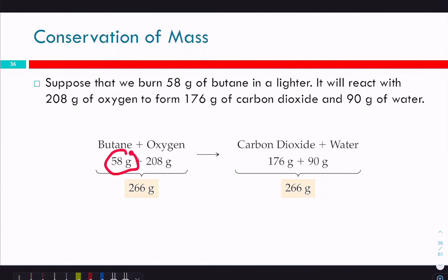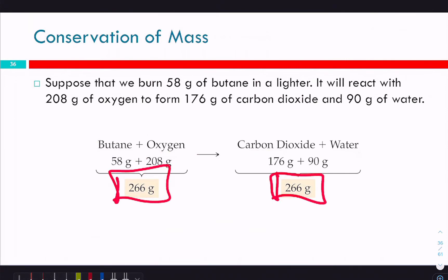If we have 58 grams of butane and 208 grams of oxygen, that's 266 grams total. The carbon dioxide and water created on the other side will have the same total mass — 266 grams — because now it's no longer butane or oxygen, it's carbon dioxide and water. The mass is conserved because we just rearranged those atoms.